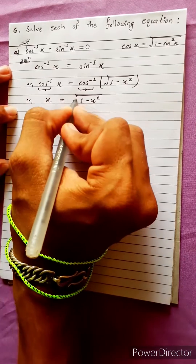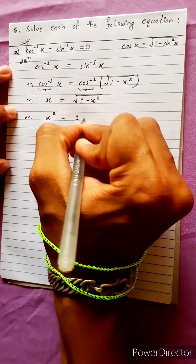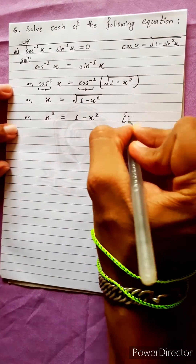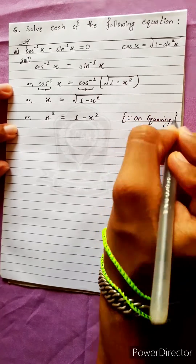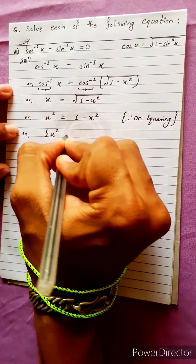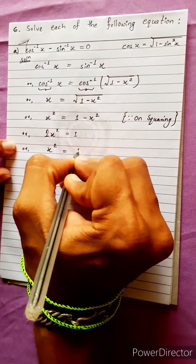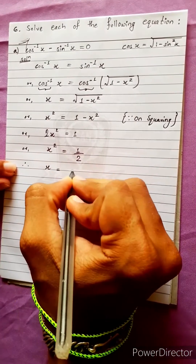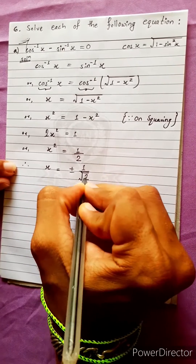On squaring both sides, the root cancels. We get x squared equals 1 minus sin square x equals 1 minus x squared. This gives us 2x square equals 1, therefore x square equals 1 by 2, and x equals plus or minus 1 upon under root 2.